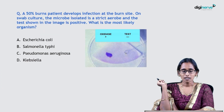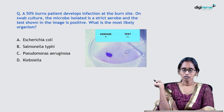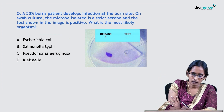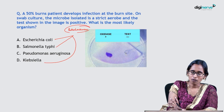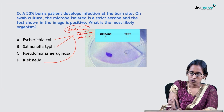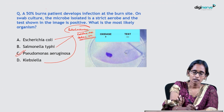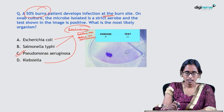Next question: A 50% burns patient develops infection at the burn site. On swab culture the microbe is isolated as a strict aerobe and the test shown in the image is positive — meaning it is oxidase positive. E. coli, Salmonella, and Klebsiella all belong to Enterobacteriaceae, and under Enterobacteriaceae all of them are catalase positive and oxidase negative. So the answer here is Pseudomonas aeruginosa, which is also the most common infection seen in burns patients.